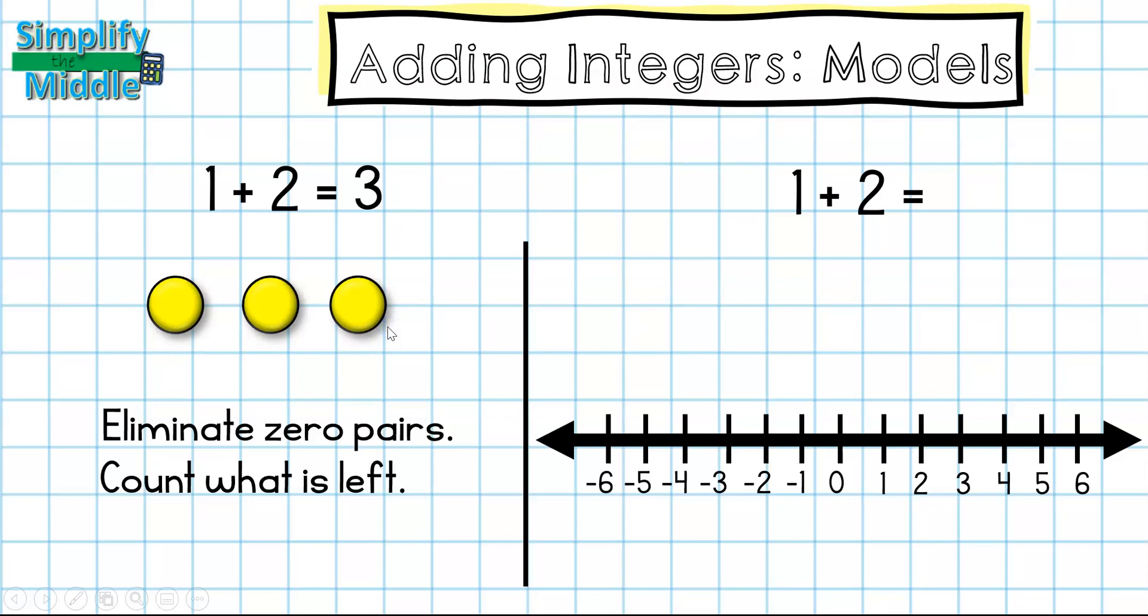Let's look at this on a number line. This first number this time instead of putting out one counter we have to show it on a number line. We're going to start at zero and then what positive or negative is going to tell me which direction to go. So because one is positive I'm going to go one right.